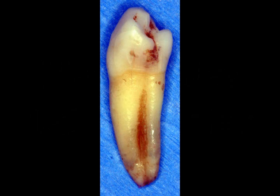The mandibular first premolar resembles a canine in that it has a large buccal cusp and a very short lingual cusp that kind of resembles a cingulum. When you look at an interproximal view, you'll notice that the buccal cusp is taller and the lingual cusp is shorter. You'll also notice that the buccal surface is curved and the lingual surface is either straight or leans to the lingual.